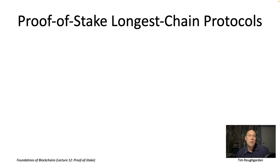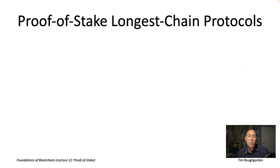Back when we talked about the proof-of-work approach to Sybil resistance in lecture nine, we focused only on longest chain consensus, also known as Nakamoto consensus. We saw that if you try to couple BFT-type consensus with proof-of-work Sybil resistance, you've got problems. Any straightforward way of doing that will cause you to lose liveness even in the synchronous setting because of the potential fluctuating hash rate.